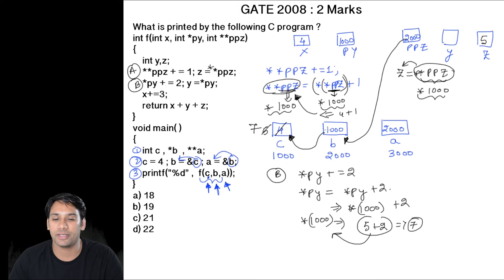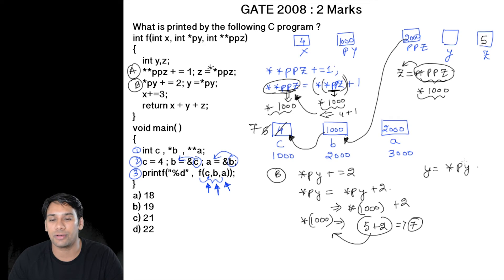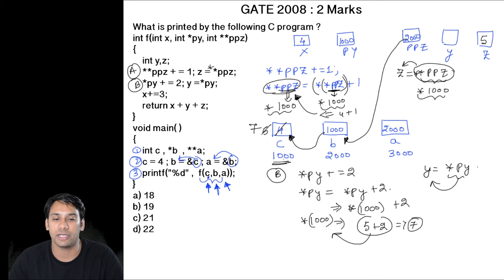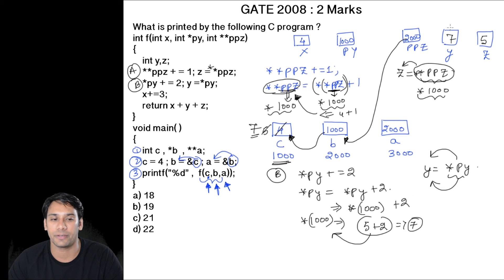The next statement is y = *py. That means we go to the location pointed to by py, which is 1000, and take the value stored there. The value at location 1000 is 7, so we store 7 into variable y. Therefore, y is now 7.